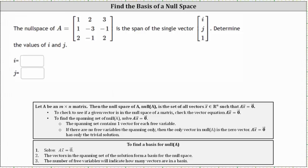The null space of A is the span of a single vector, i, j, one. We're asked to determine the values of i and j. This means we have to find a basis for the null space where the third component is equal to one.